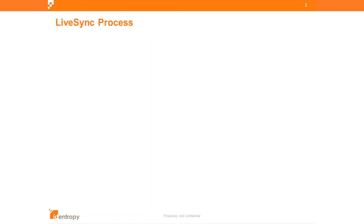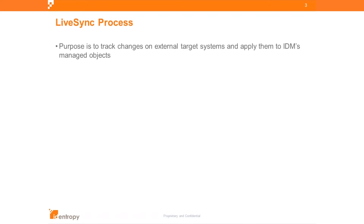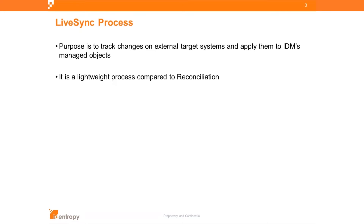The LiveSync process — what is its purpose? It's to track changes in external target systems and apply them to IDM's managed objects, because IDM has no other way to track changes of systems that it connects to, whether it's a database or a directory. LiveSync is a lightweight process compared to reconciliation because it only looks at changed data in your target system — whether OpenDJ, an Oracle database, or any other database — as opposed to reconciliation, which looks at a large dataset, compares source and target, and then applies those changes appropriately.